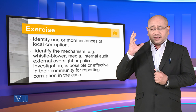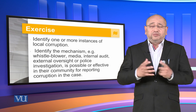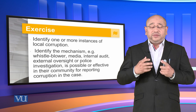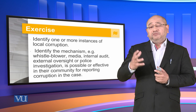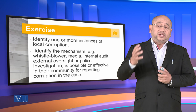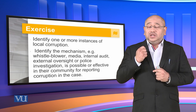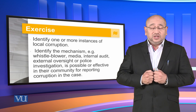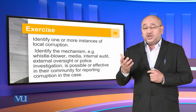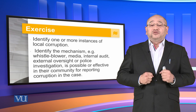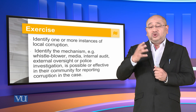After that, you are going to identify a mechanism — for example, if that corruption had taken place, how could it be identified and how could more people get to know of that particular incident? Would it require a whistleblower, and how would that whistleblower blow the whistle without damaging their career or family? Could we use media, internal audit, external oversight, or a police investigation?